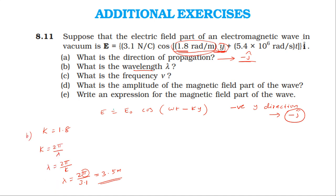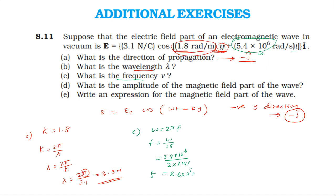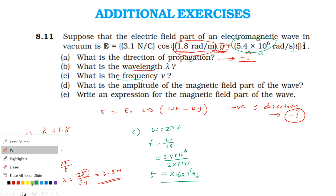For frequency, we take the coefficient of time, which is ω = 5.4 × 10^6 radian per second. Since ω = 2πf, frequency f = ω / 2π = 5.4 × 10^6 / (2 × 3.14), which gives us approximately 8.6 × 10^5 Hz.